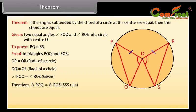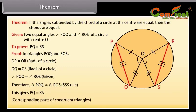Therefore by SAS congruence rule, triangle POQ is congruent to triangle ROS. This gives PQ is equal to RS, because corresponding parts of congruent triangles are congruent.